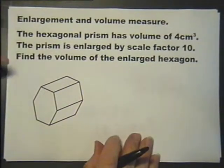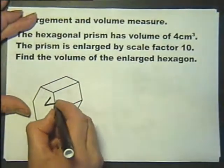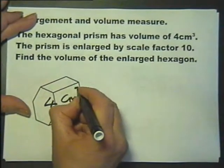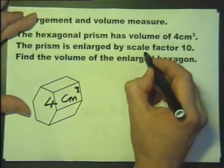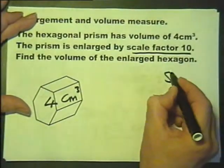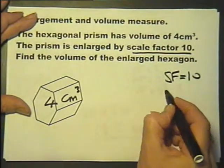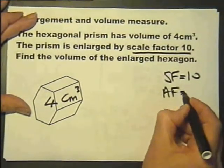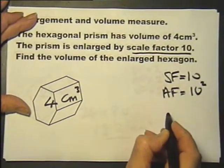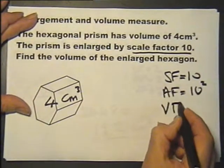Here we have a hexagon prism and its volume is 4 cubic centimetres. It's been enlarged by scale factor 10. If we were considering the area of this face we'd have to use the area factor, but as we're considering the volume we'll have to use the volume factor.